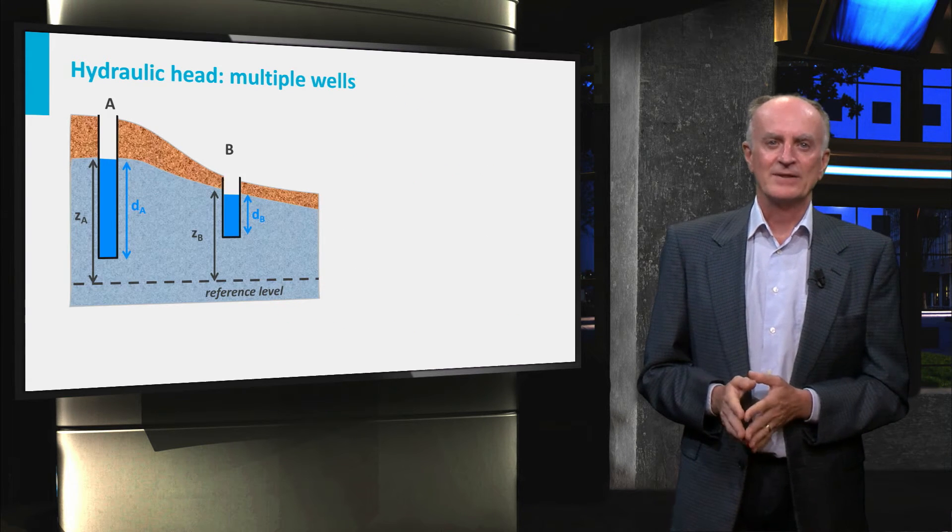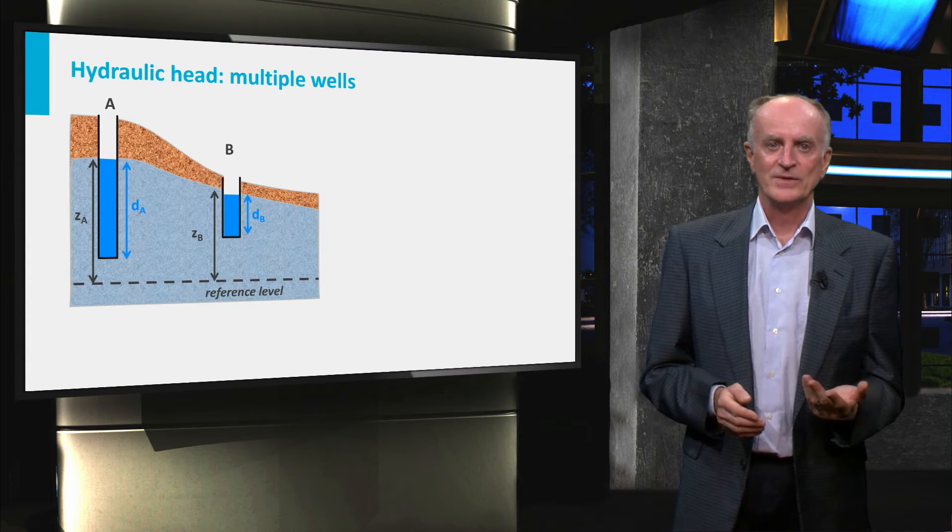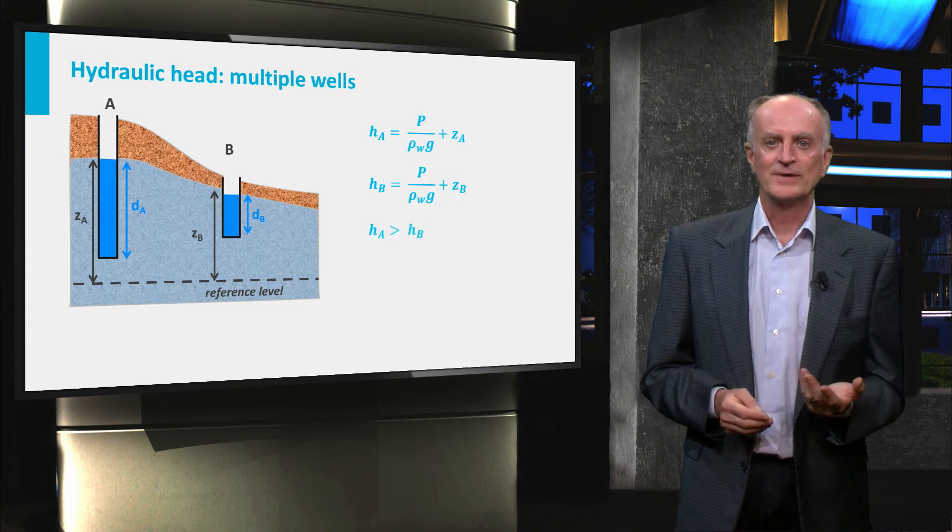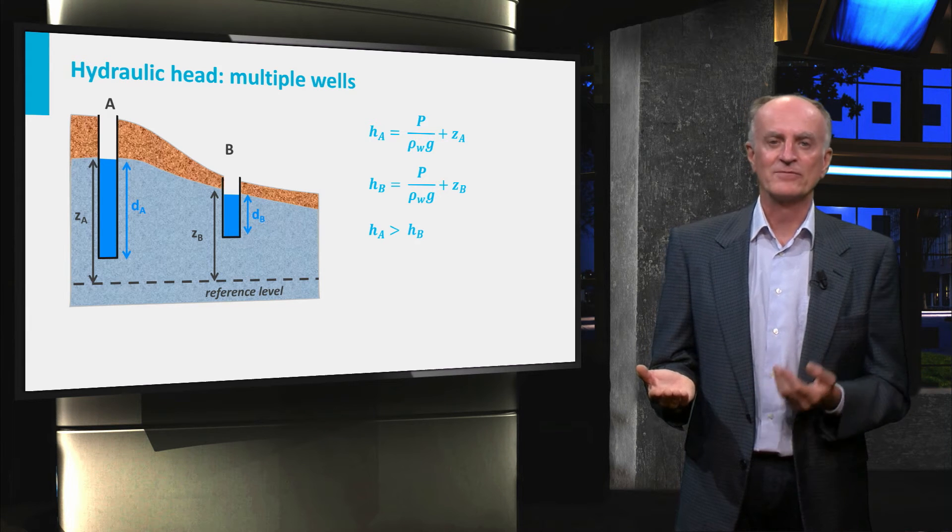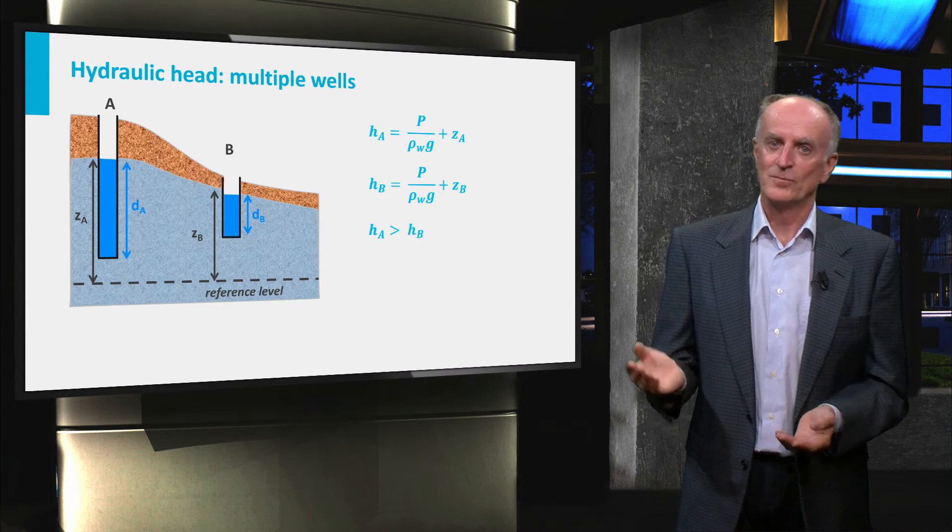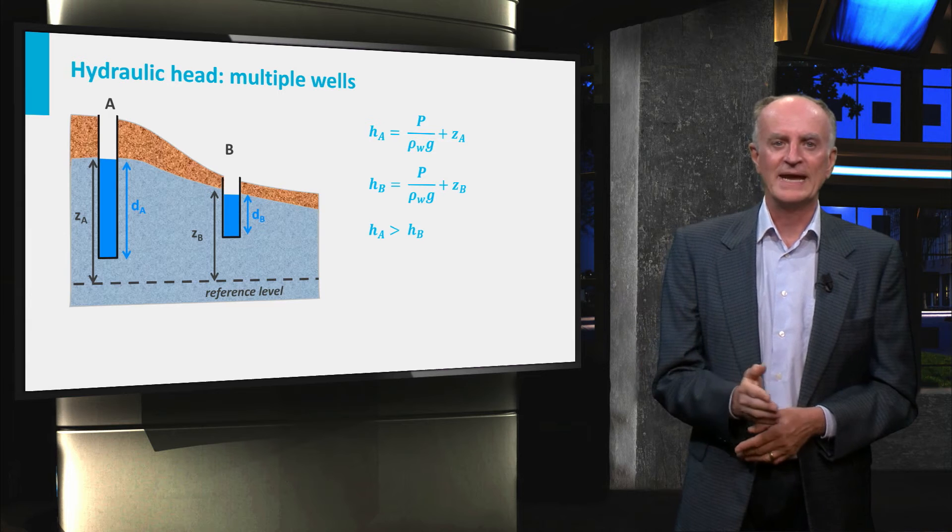Let us now look at another situation with two wells. Using the rules mentioned above, you can clearly see that well A has a head larger than that of well B. If possible, water would then tend to flow from A to B.